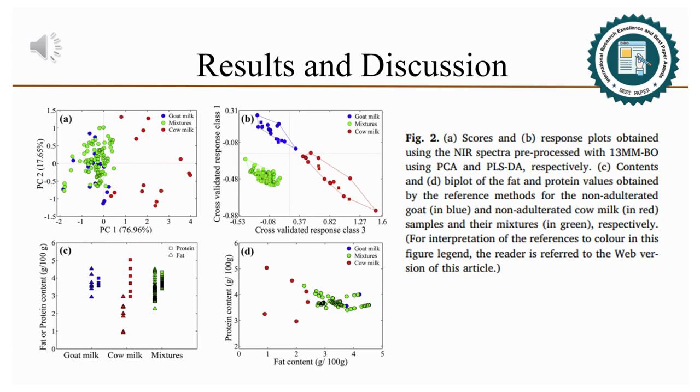These findings indicate that all chemical information distributed along the whole spectrum allows the recognition of additions as low as 1.0154 grams per 100 grams of cow milk added to goat milk when applying PLSDA.